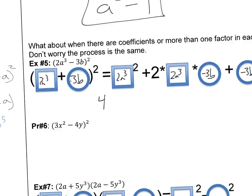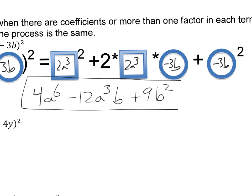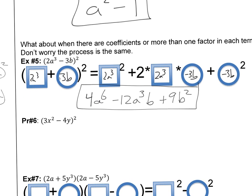Back to the problem: applying the pattern, we get 4a to the 6th. Then 2 times 2 times negative 3 is negative 12, so we write negative 12a cubed b. Then negative 3 squared is 9, so we add plus 9b squared. So the full answer is 4a to the 6th minus 12a cubed b plus 9b squared. The pattern makes even this complex-looking perfect square straightforward — just plug everything in where it goes.